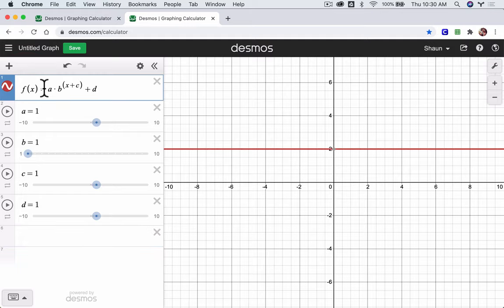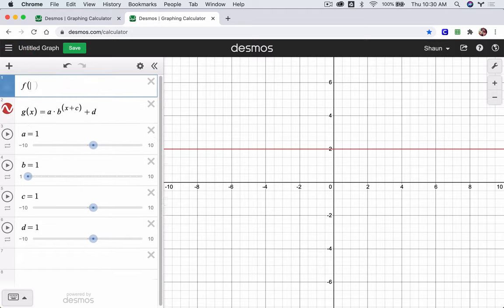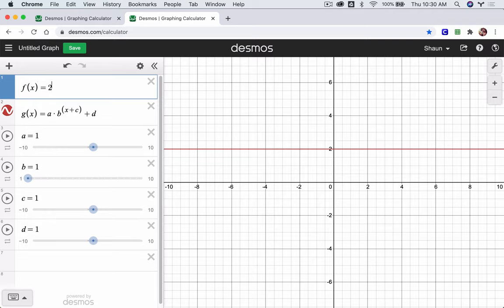So I'm actually going to delete the f and put a g. This will be g of x. It's our red function. It'll be the function that's changing. I'm going to add an expression and bring it to the top. The parent function is here, a function I can base everything on. So I'm going to do 2 to the x.